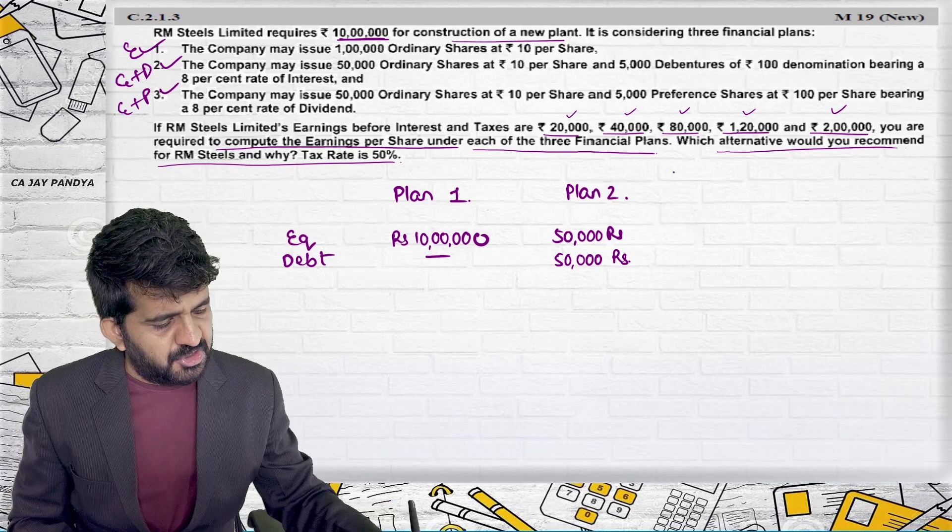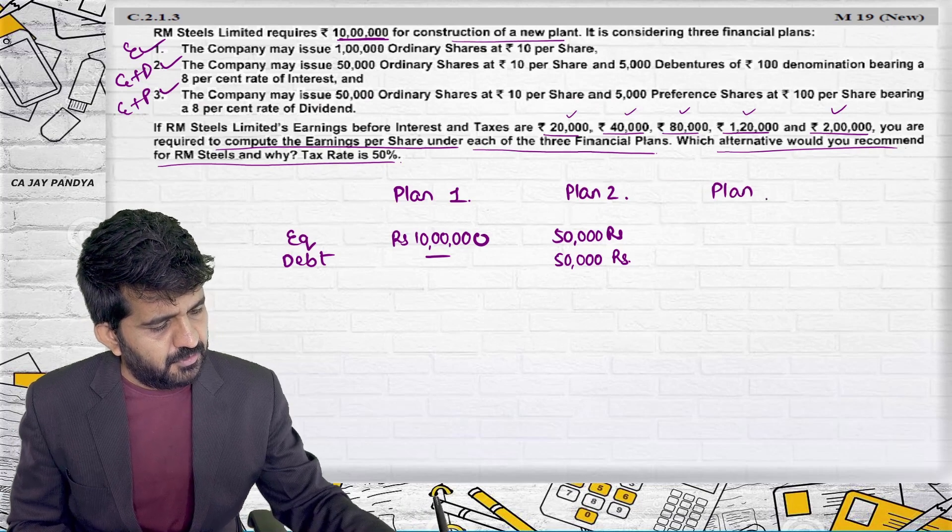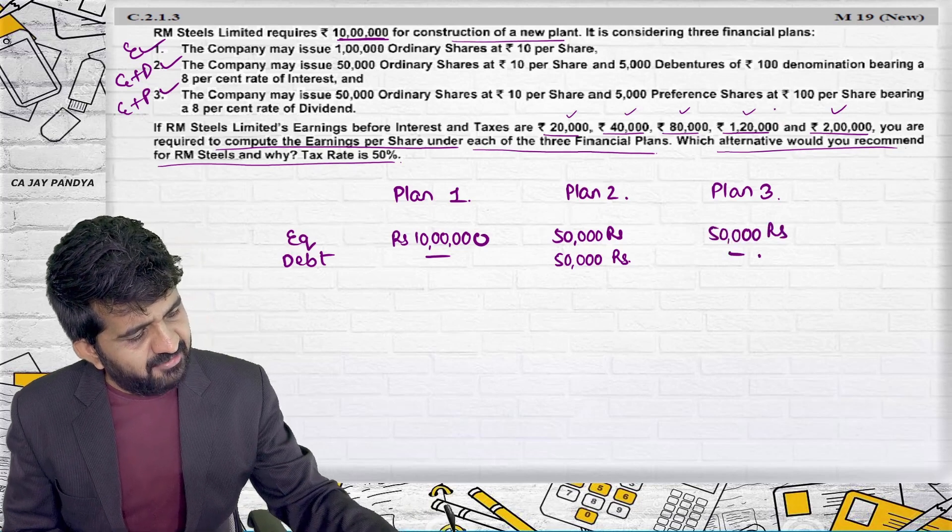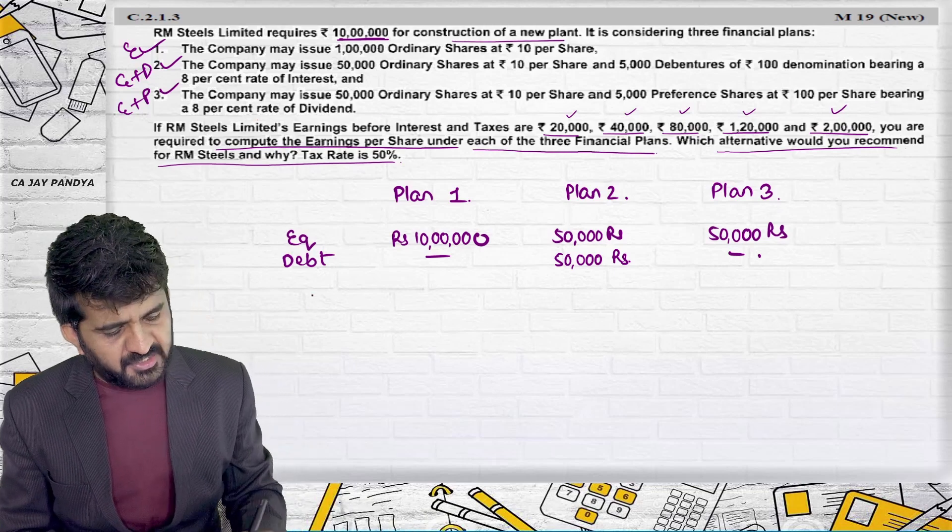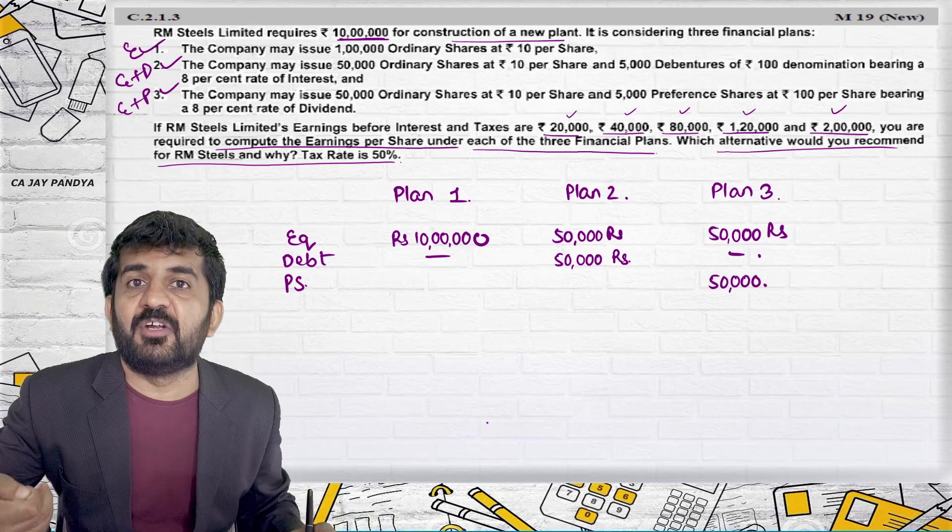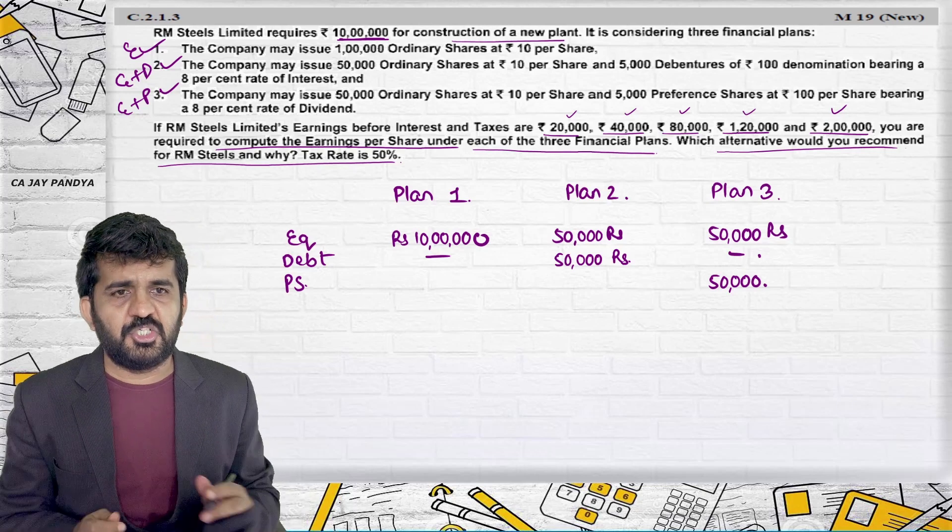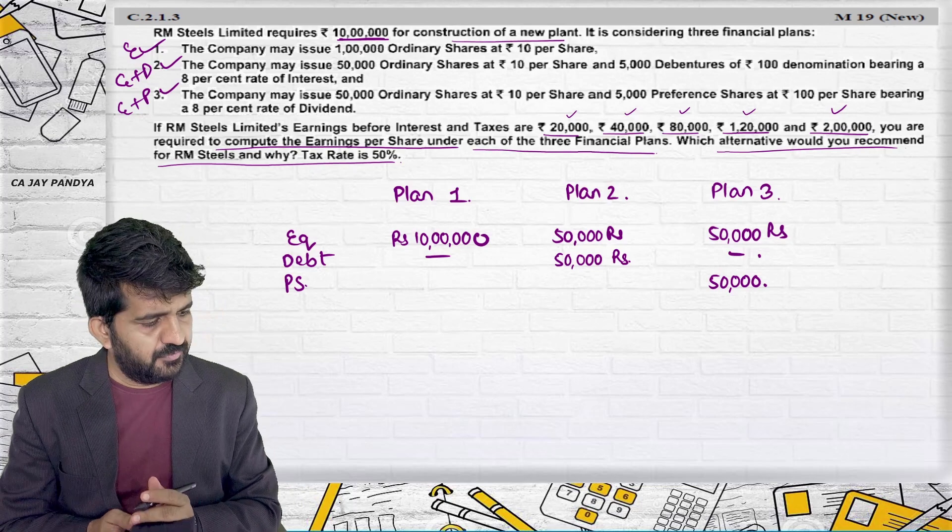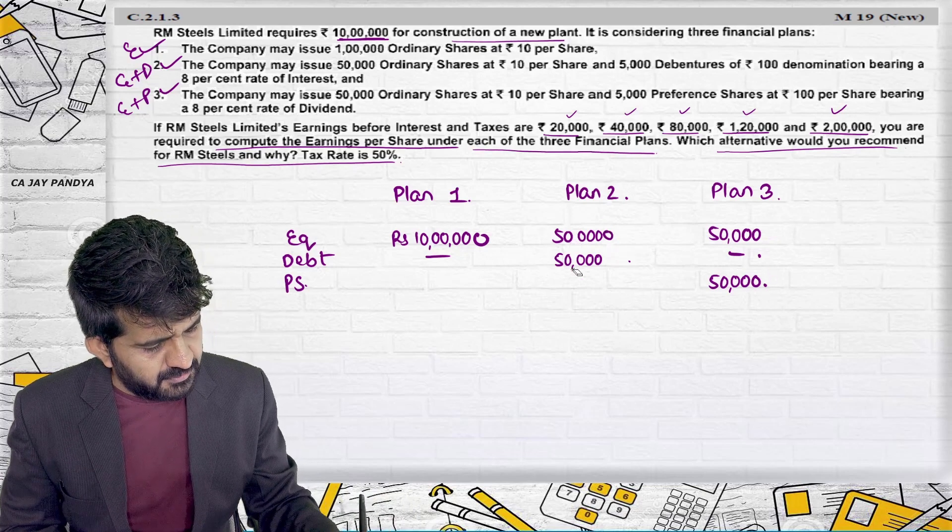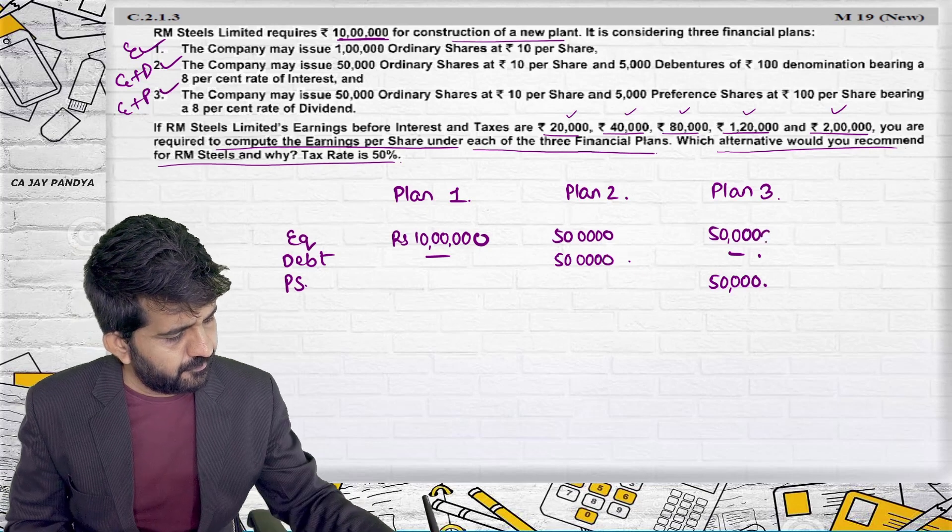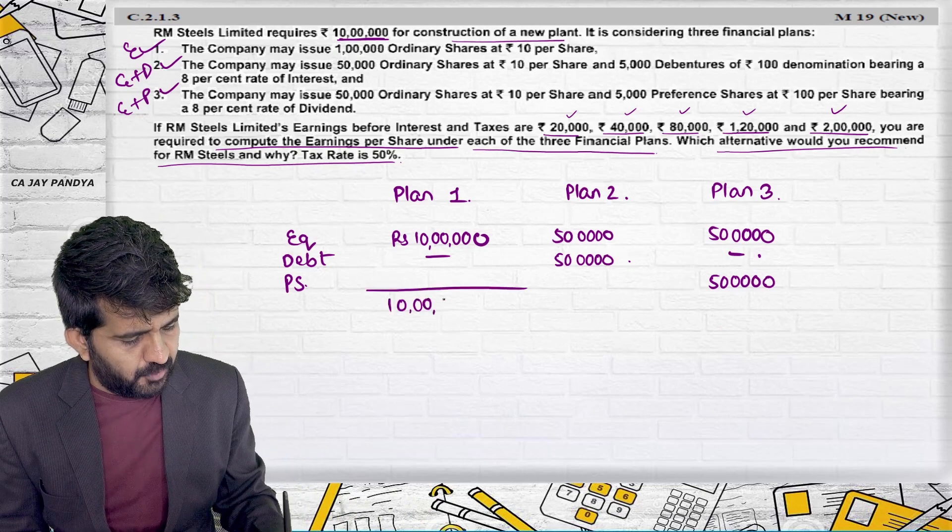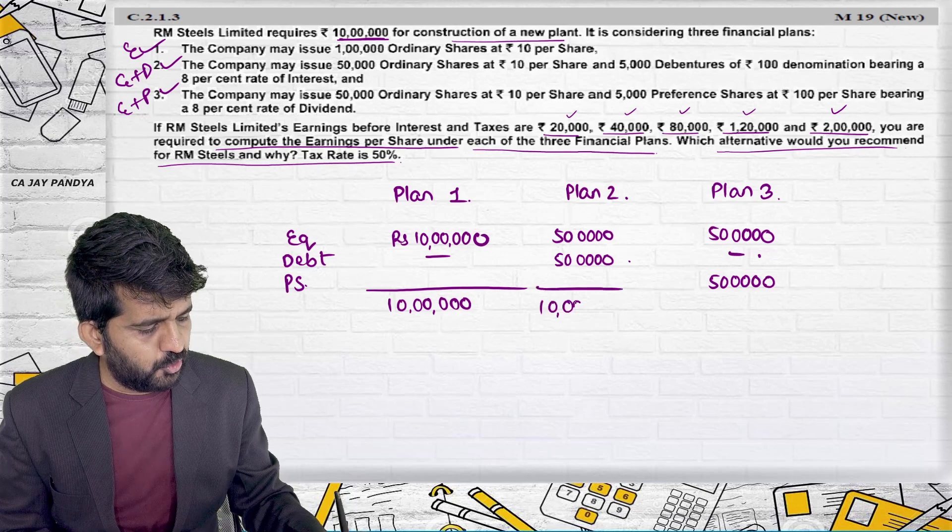Third, the company may issue 50,000 shares at the rate of Rs. 10, Rs. 50,000, it will not be having any debt, but preference shares of Rs. 100 each. So preference shares, you need Rs. 50,000 more. So you will issue 500 preference shares of Rs. 100 each. Yes, Kishan. 5 lakhs, not 50,000. Sorry, it will be 5 lakhs, thank you. It will be 5 lakhs rupees. In this case, also your borrowings will be 10 lakhs. In this case, also your borrowings will be 10 lakhs.